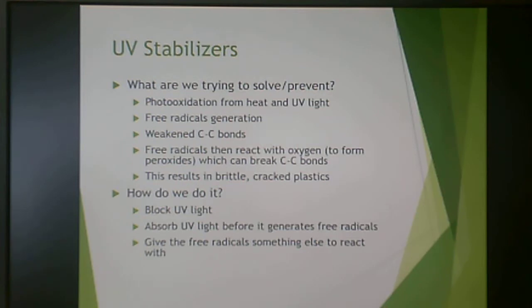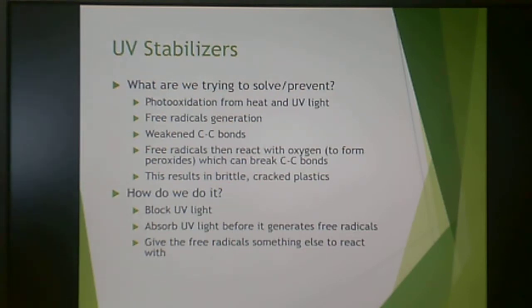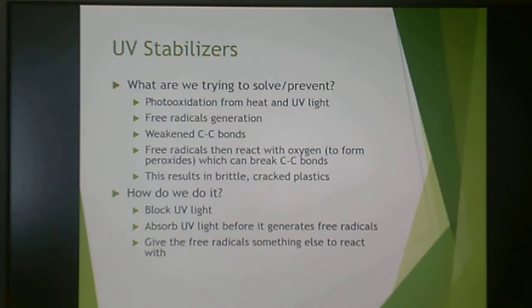A UV stabilizer — you might guess that if we are adding one, we are trying to prevent photo-oxidation from heat and UV light. UV light is dangerous not only for people but for polymers. Free radicals are produced by UV light and those break carbon-carbon bonds. Most of these polymers have a carbon-carbon backbone, so a free radical reacts with oxygen in the environment, forms a peroxide, and that breaks a carbon-carbon bond, resulting in a brittle, cracked plastic.